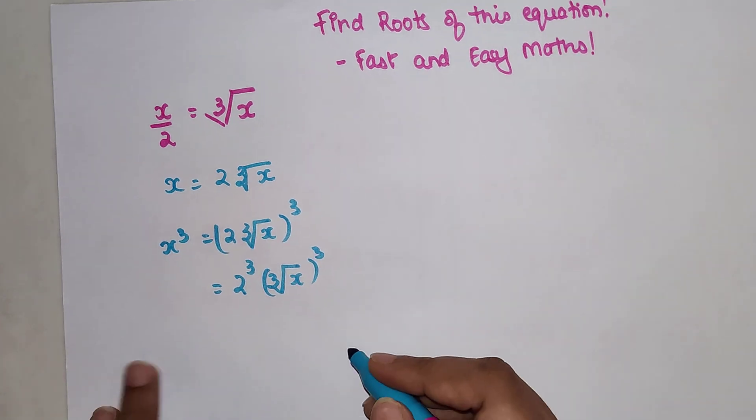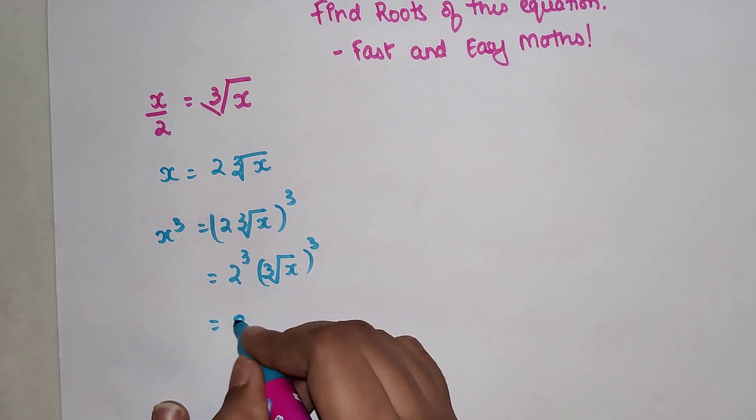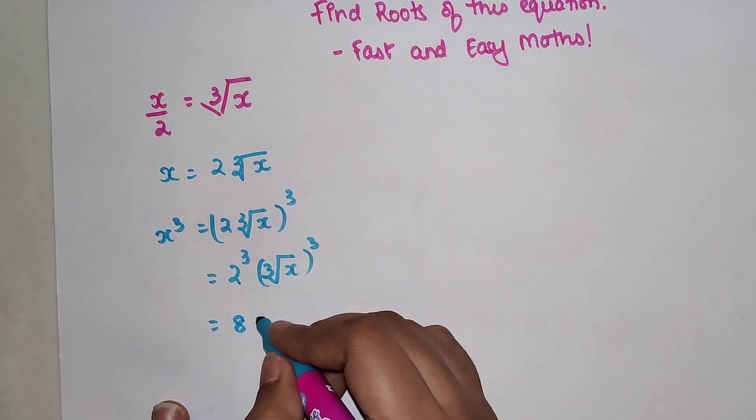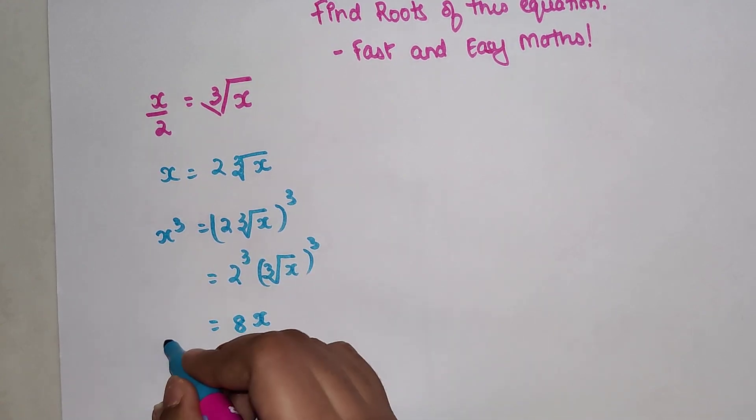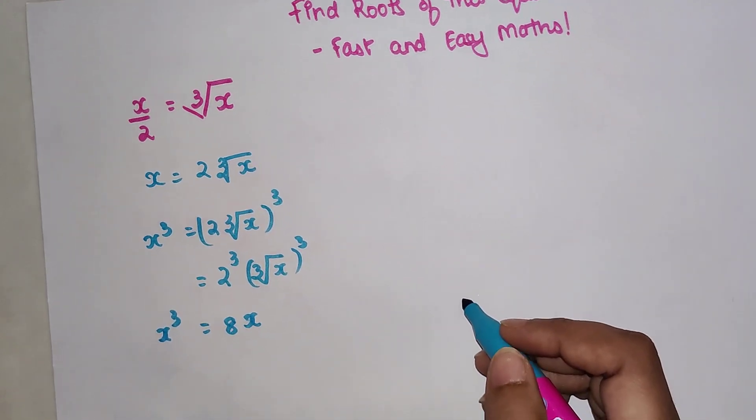So this cube root and this raise to 3 gets cancelled, and 2 cubed is 8, so which will now become 8x equals x raised to 3.